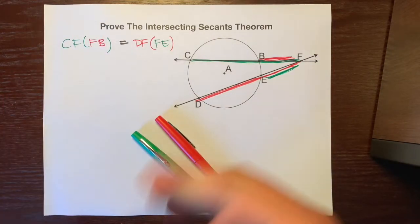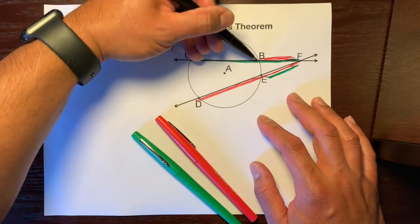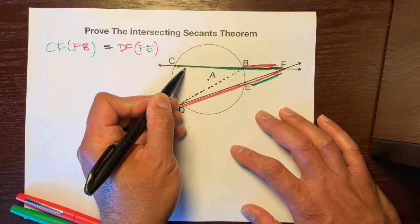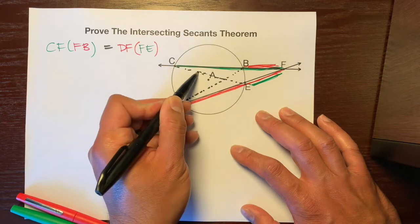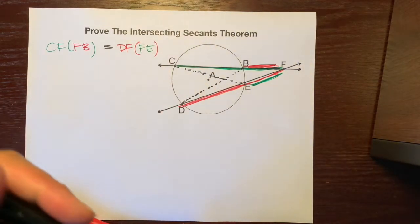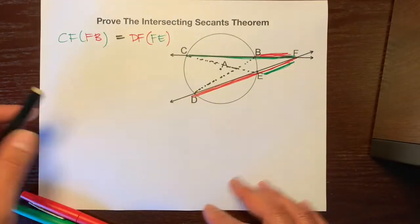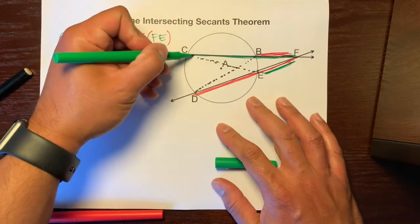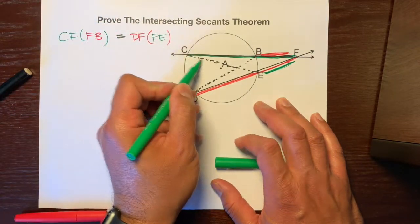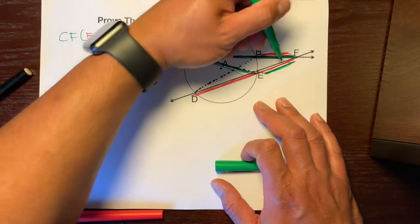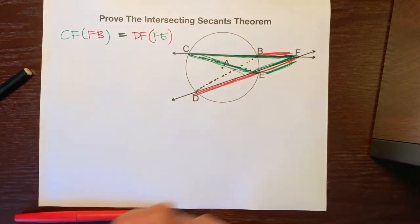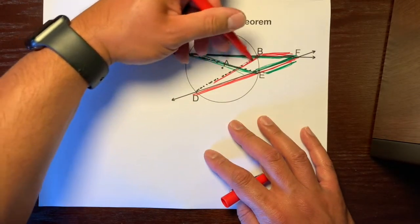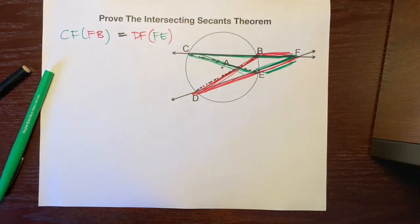In order to prove it, we're going to connect B to D and C to E with dashed lines. These two dashed lines create a bunch of triangles, but we're going to focus on two in particular. Take your green pen and trace triangle C-F-E, then take your red pen and trace triangle B-D — now we have our green triangle and our red triangle.